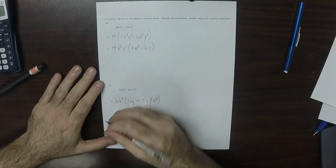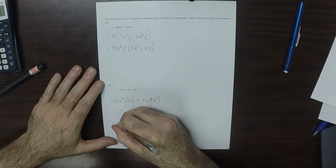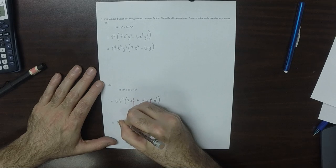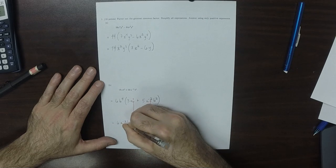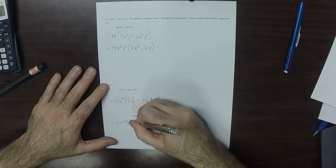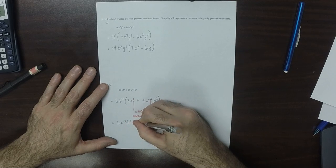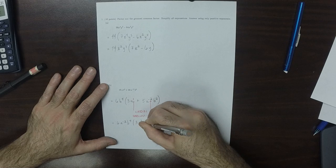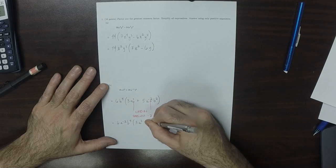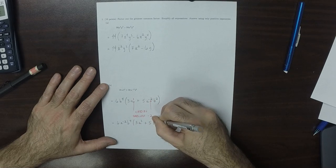So that would be 6a to negative 2b to positive 4, 3a to the 3 plus 5b to the 2.